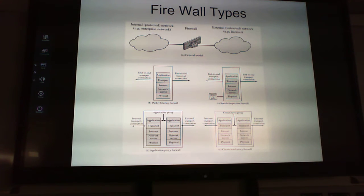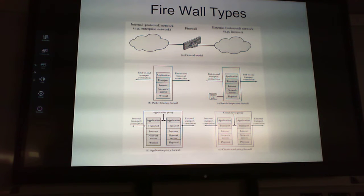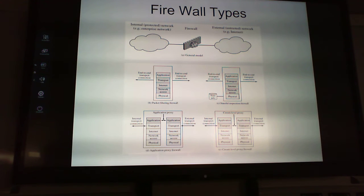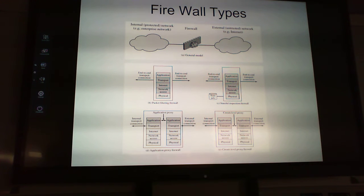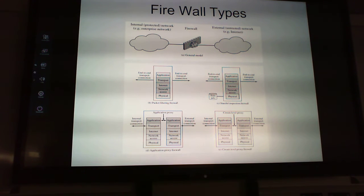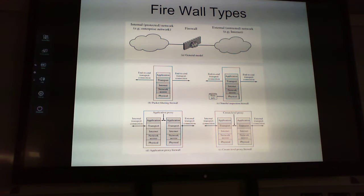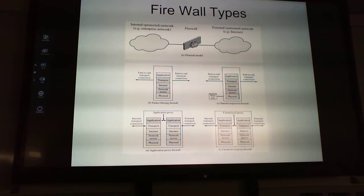Types of firewalls: packet filtering firewalls, which pass traffic straight through the stack; stateful inspection firewalls; application proxy firewalls, which show two stacks with a proxy bridge between them; and circuit-level proxy firewalls, which use a circuit-level bridge instead of an application-level bridge.